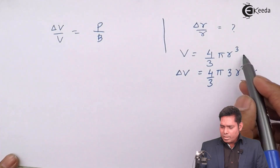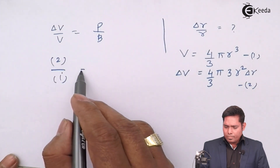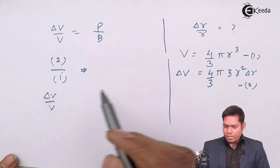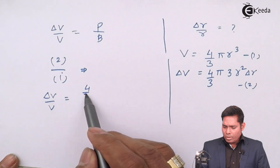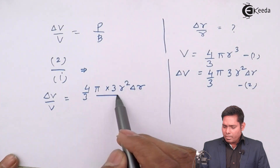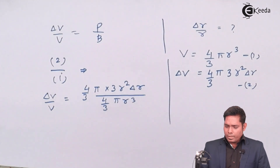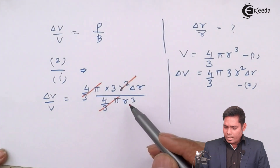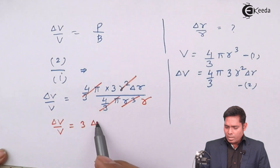Now dividing equation 2 by equation 1 — delta V over V on the left side equals, on the right side, (4/3)π times 3R² delta R divided by (4/3)π R³. The 4/3 π cancels, one R² and one R³ leave R in the denominator, so ultimately delta V by V equals 3 delta R over R.